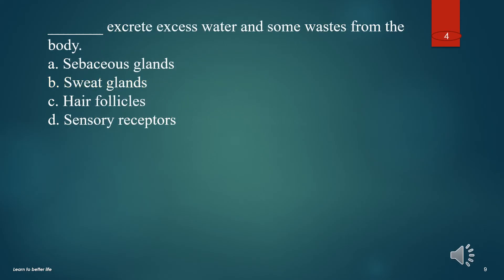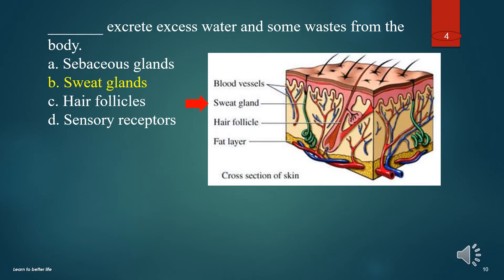What excrete excess water and some wastes from the body? A. Sebaceous glands. B. Sweat glands. C. Hair follicles. D. Sensory receptors. The answer is B. Sweat glands.